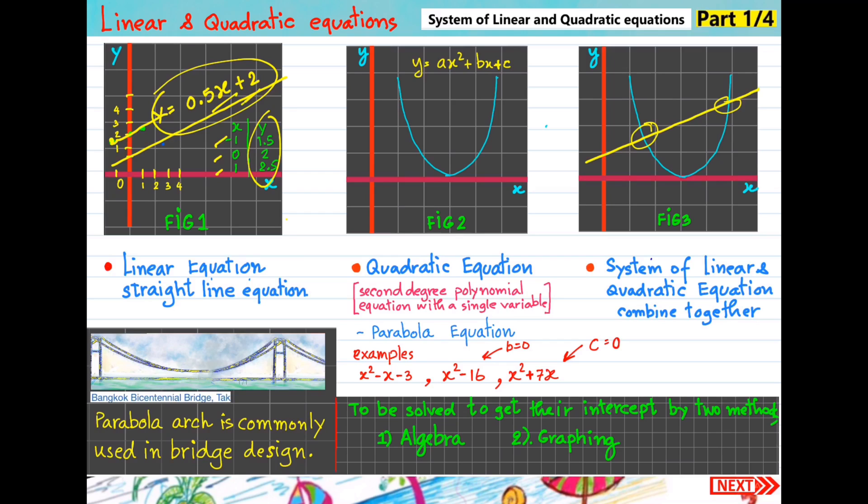Take a look at figure 2. It's a curved line. The equation relates to curved line. We call it a quadratic equation that has general standard form y equals ax squared plus bx plus c. Another way to say it is a second degree polynomial equation with a single variable, meaning x squared - only one variable has square.